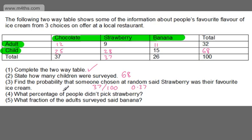What percentage of people didn't pick strawberry? We can see 37 of 100 did, which is 37%. Therefore, taking 37 from 100 gives me 63 of 100 — that's 63%. We could have found that by adding chocolate and banana together: 37 and 26 is 63, which is 63%.